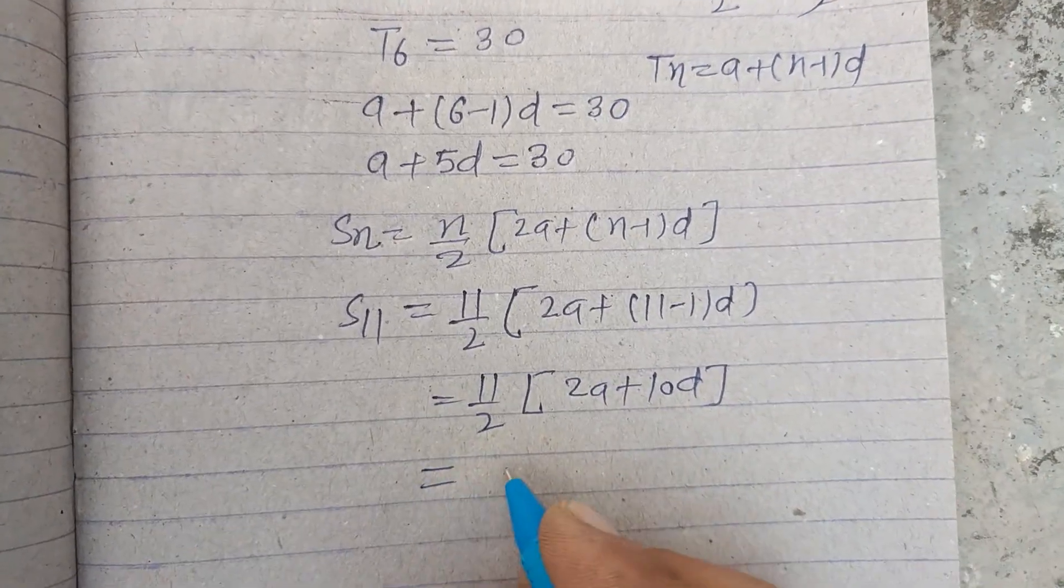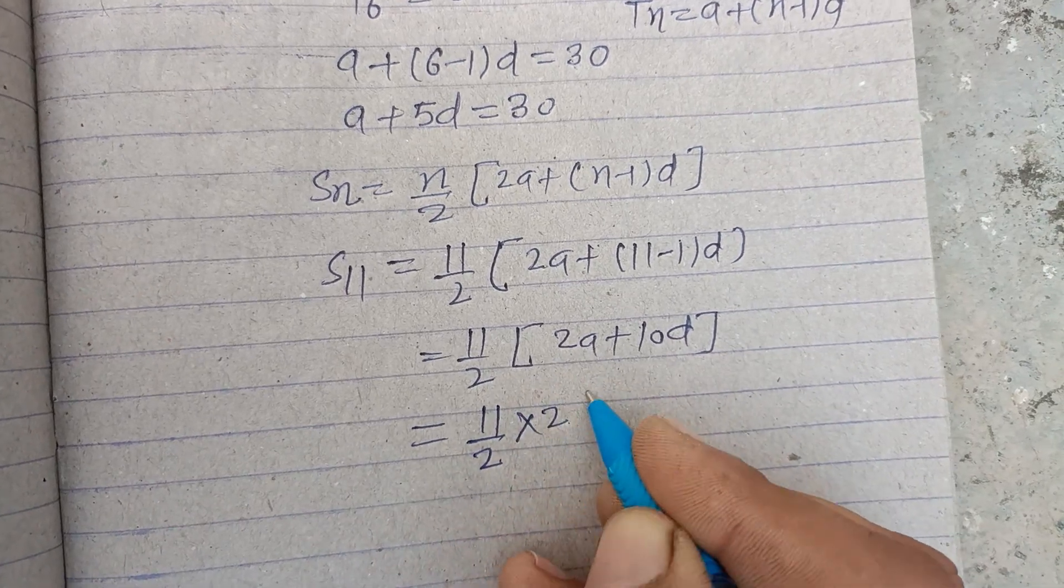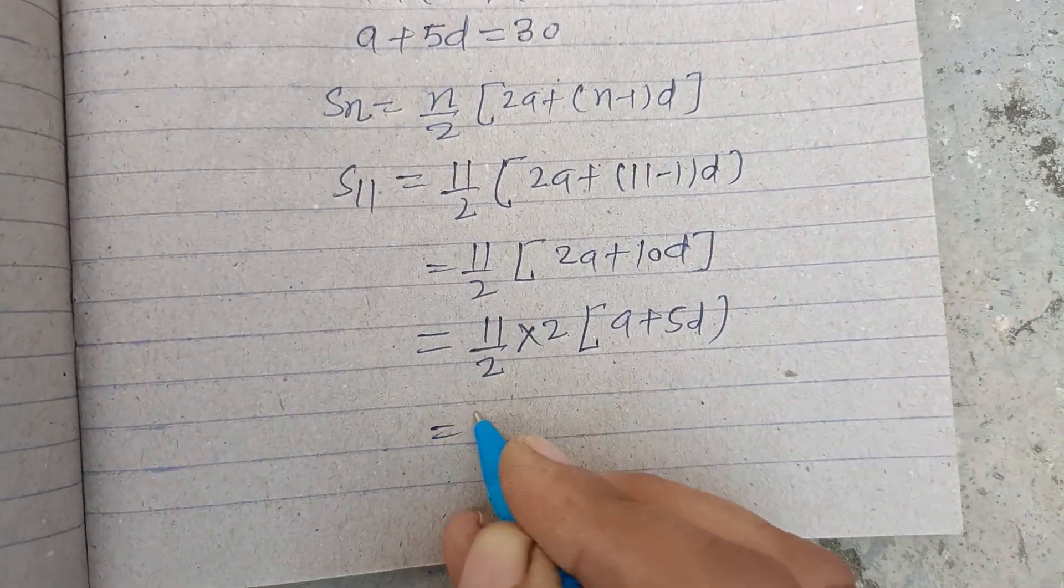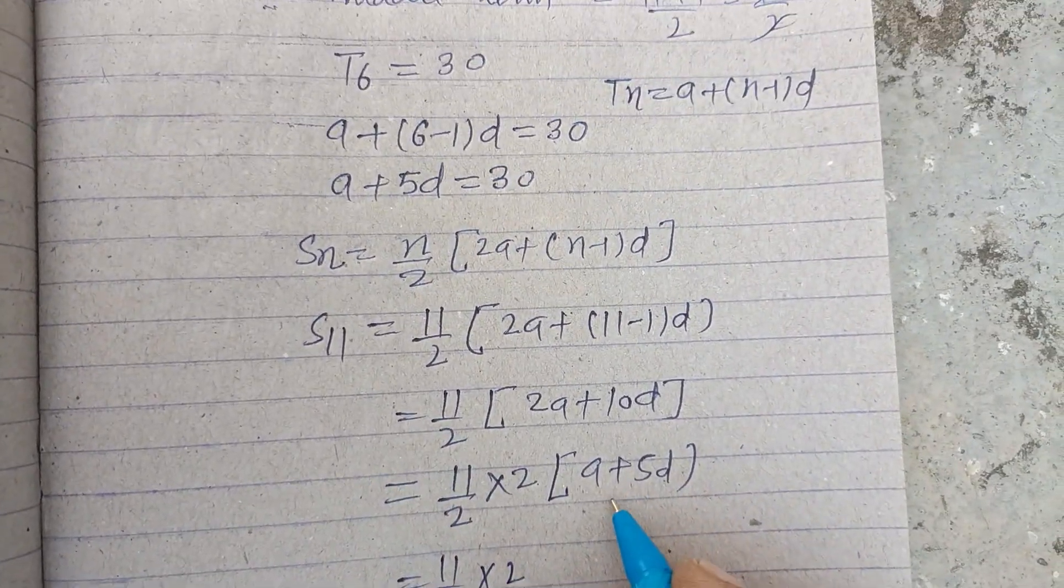We take 2 common from inside, so this becomes (a + 5d). 11/2 times 2...